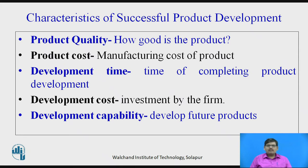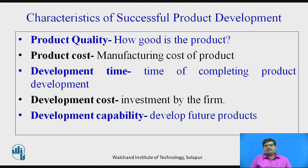Then development time — the time of completing the product development. Different people from different teams and departments come together for product development. There should be liaison and coordination between all these members. Having coordination among them to develop the product within time is very much important, without hampering the quality or other features of the product. Developing the product on time depends upon the skill of the leader of the team.